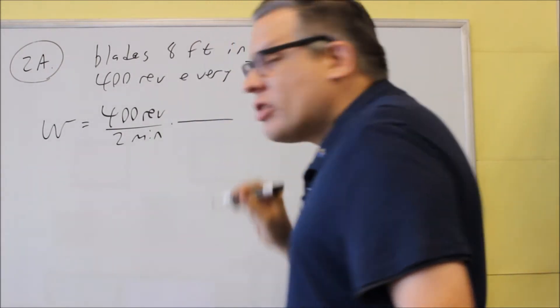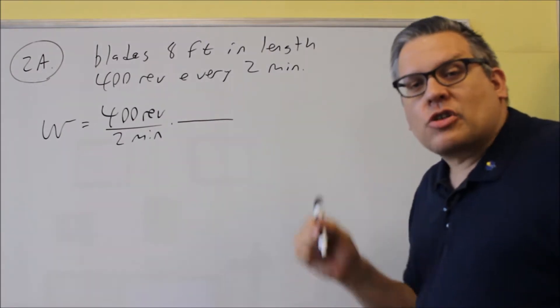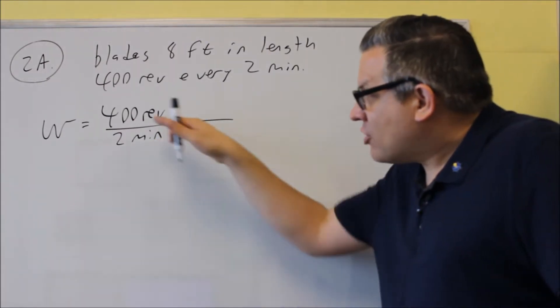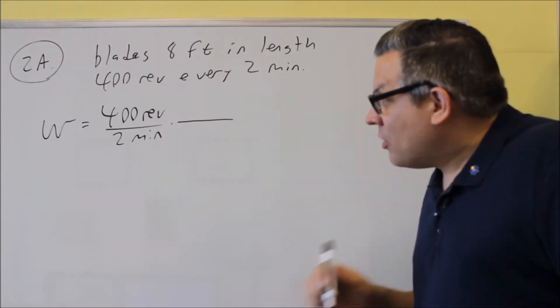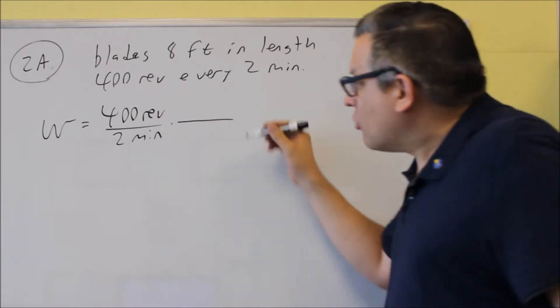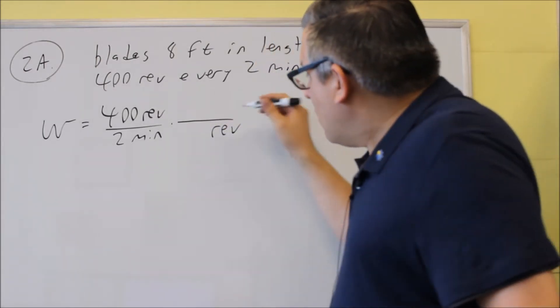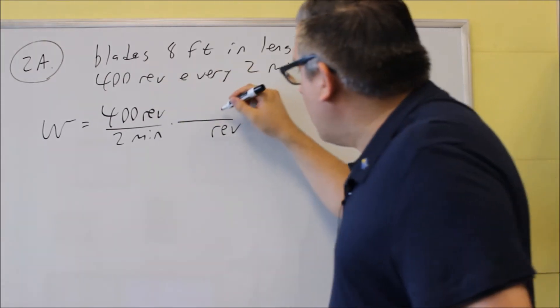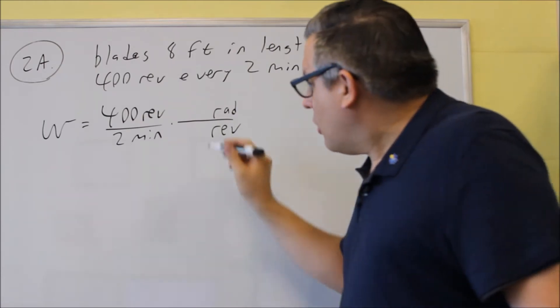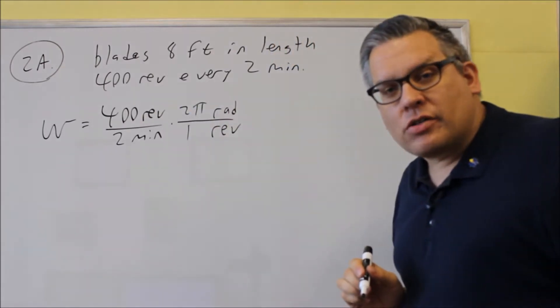So what I need to do is use the dimensional analysis to change this into radians per second. So I have to change the revolutions and I have to change the minutes. First thing I want to do is change the revolutions into radians. I'm going to put revolutions on the bottom because I want that to cancel and I want to have the radians left on top. Now one revolution is the same thing as 2π radians.